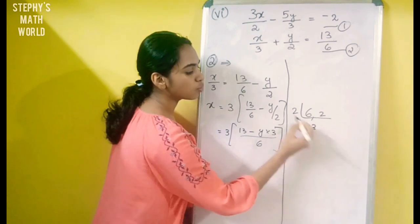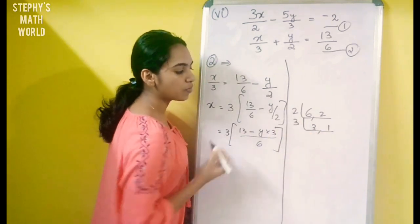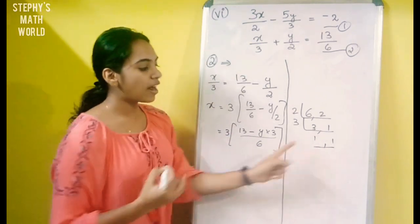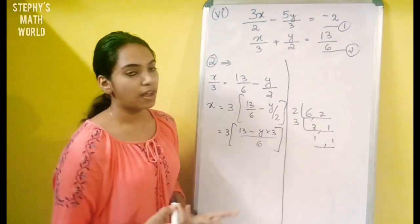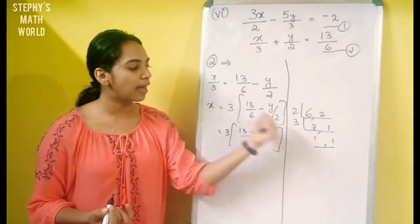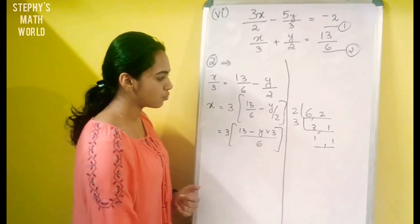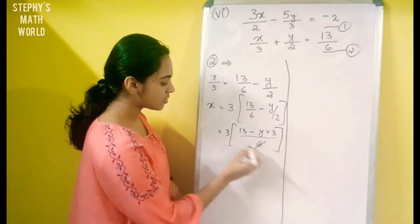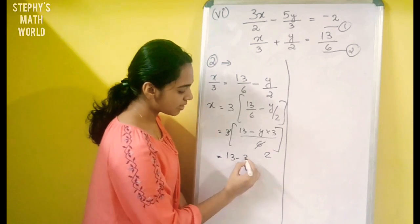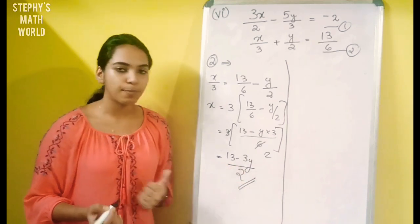So y equals 3. We use 3: 2s are 6 and 1, 2s are 2, that's 3. 1, 3s are 3. We multiply: 3 into 2 is equal to 6. That's the prime factorization — 6 and 2 gives 6. So the 6 and 3 cancel. Therefore x is equal to 13 minus 3y divided by 2. Now x is equal to 13 minus 3y divided by 2.